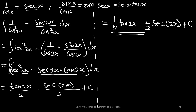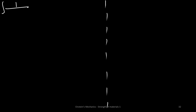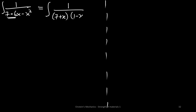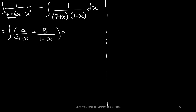Now for problem B. We are to find the integral of 1 on (7 − 6x − x²). This is a quadratic expression, so we express it in its simplest form. The denominator factors as (7 + x)(1 − x). We will use partial fractions, writing this as A on (7 + x) plus B on (1 − x).